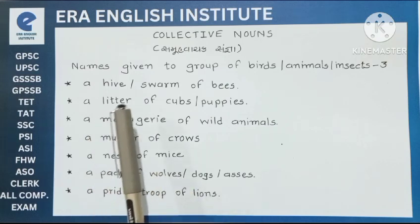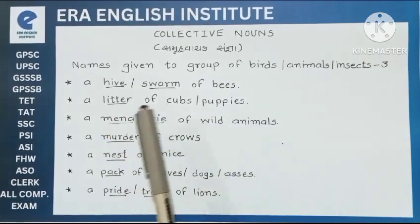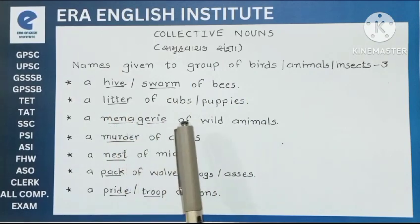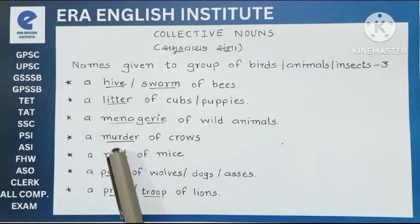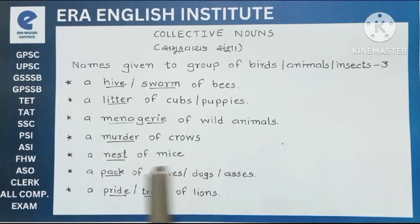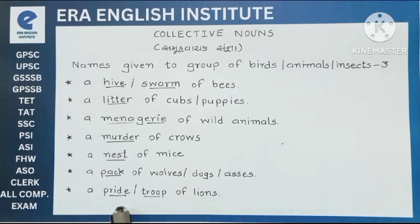Now if we underline all the collective nouns of this part: hive and swarm for bees; litter for cubs or puppies; menagerie for wild animals; murder for crows; nest for mice; pack for wolves, dogs, or asses; and pride or troop for lions.